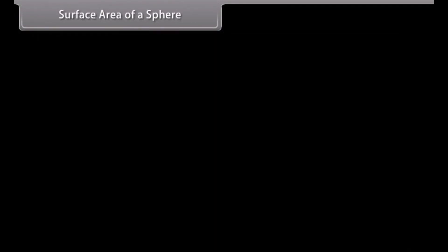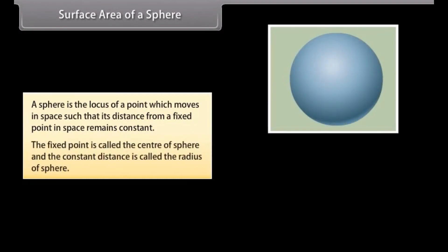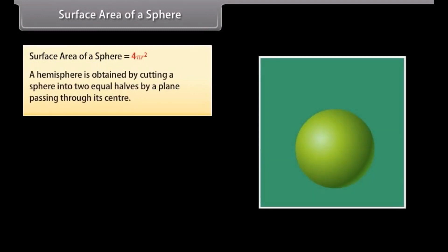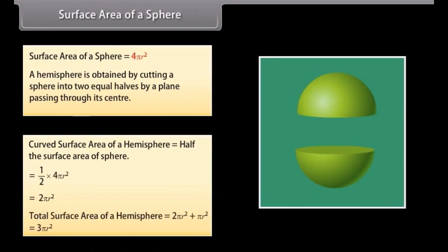Surface area of a sphere. A sphere is the locus of a point which moves in space such that its distance from a fixed point remains constant. The fixed point is called the center and the constant distance is the radius. A sphere is like the surface of a ball. Surface area of a sphere = 4πr². A hemisphere is obtained by cutting a sphere into two equal halves. Curved surface area of a hemisphere = 2πr². Total surface area of a hemisphere = 3πr².